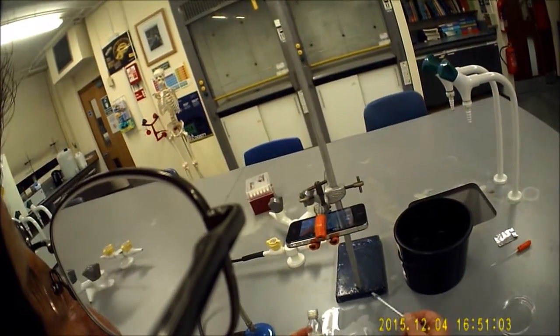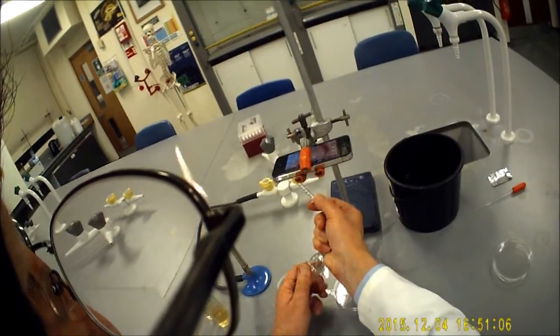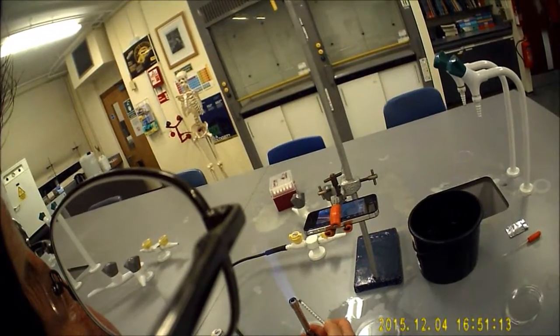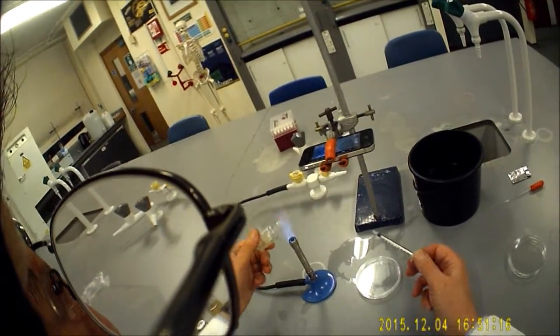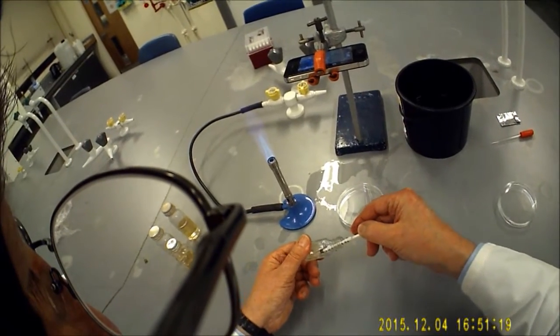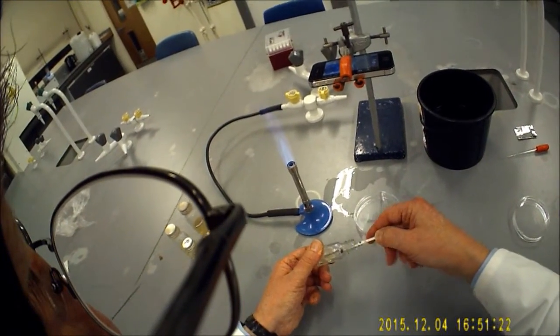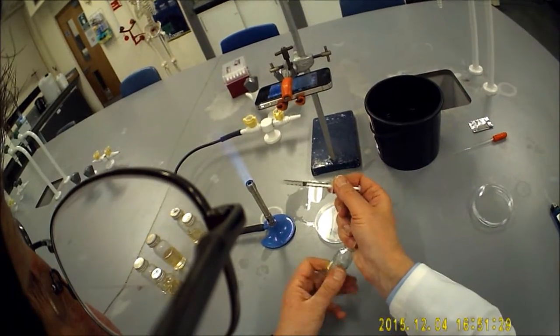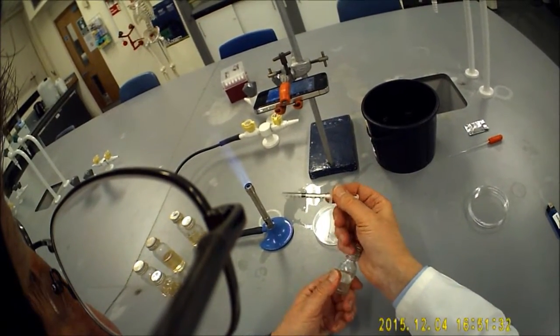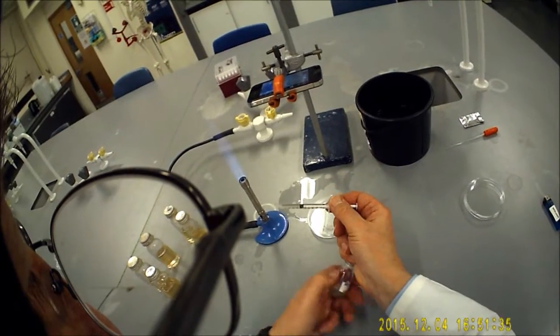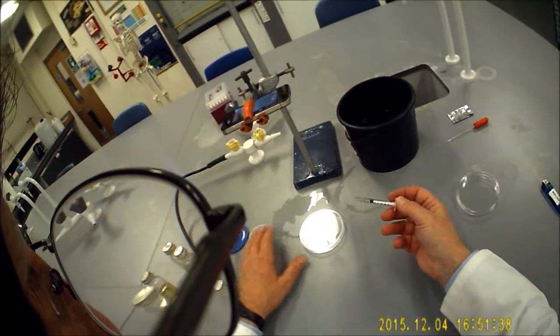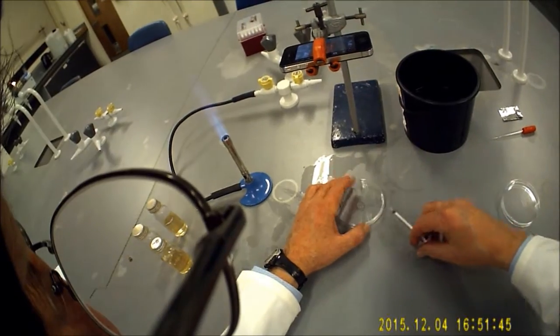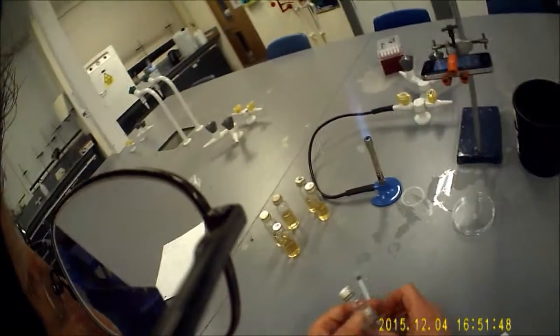I'm going to follow aseptic procedures. I've got my Bunsen burner here. I'm going to flame the mouth of the bottle, draw up 0.5 ml of the culture, flame the bottle again and seal it up. Then just introduce it underneath the lid like that. That's now safe. No contamination can get in there.